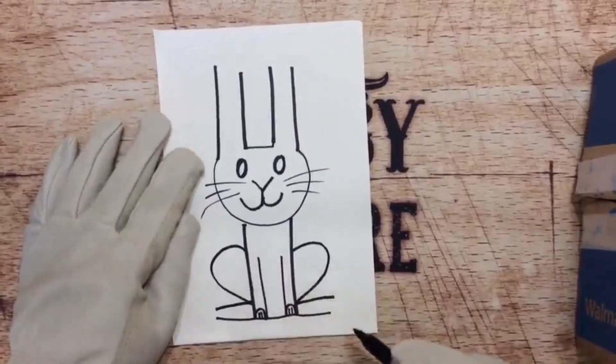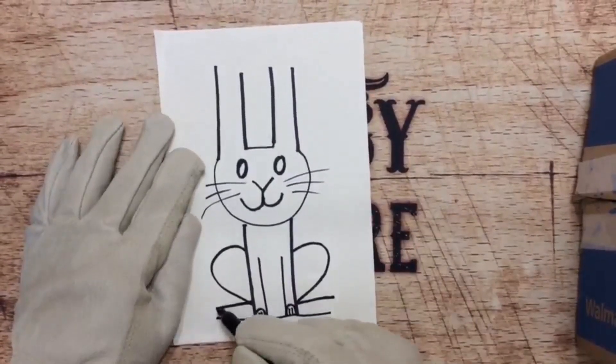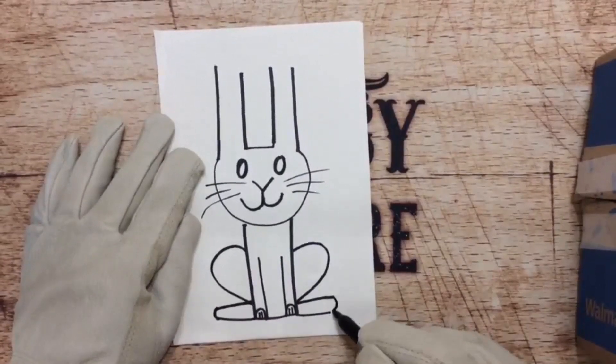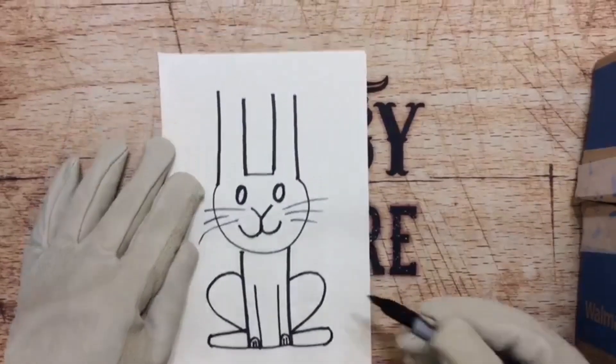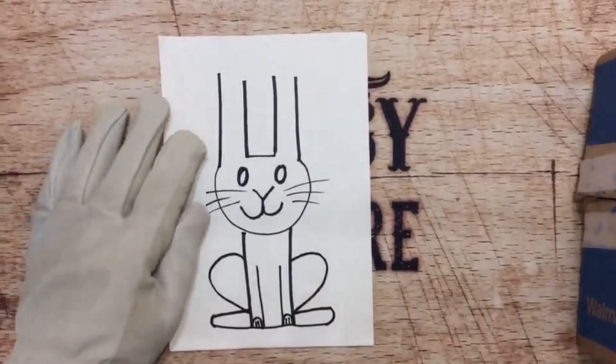All right, now to finish this off, all we've got to do is we're just going to close this off with a curvy line, close this off with a curvy line over there. And we've got to finish up his little bunny ears, right?